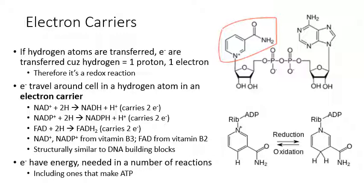The main electron carrier used by our cells is NADH; another is FADH2; plants also use NADPH. Those are the forms when they are already carrying electrons — the reduced forms. Each can carry two electrons. The oxidized form of NADH is NAD+, of NADPH is NADP+, and of FADH2 is FAD. If you start with NAD+, NADP+, or FAD and add two hydrogen atoms, you end up with NADH, NADPH, and FADH2 respectively, with two electrons transferred.